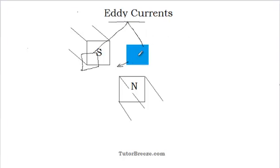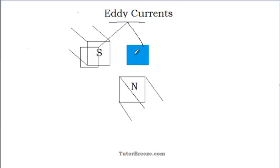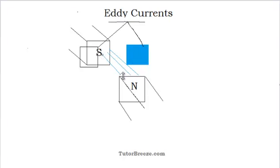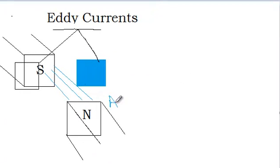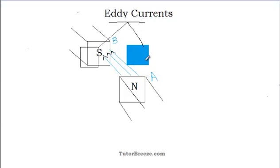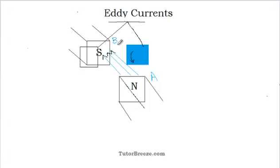Now let us see how we can find the direction of these eddy currents which flow in this plate. For this we need to use Lenz's law. The plate is entering into a region with the magnetic field from the north to south pole of the magnet. With the magnetic field in this direction, let us label this as A and this as B, so the magnetic field is present from A to B. Eddy currents will flow in such a direction that the magnetic field due to them is in a direction opposite to the magnetic field from A to B. Using the right hand rule, we can see that these currents should flow in the anti-clockwise direction, in which case the magnetic field due to these currents will be in this direction.